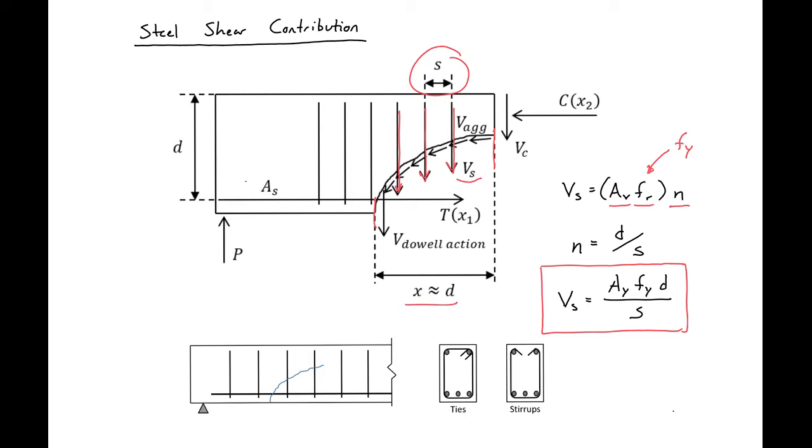In rectangular beams, we primarily have two types of shear reinforcement. We have ties which encompass the entire rectangular section, and we have stirrups which are two legs and normally continued through the bottom of the section but aren't continuous through the top.